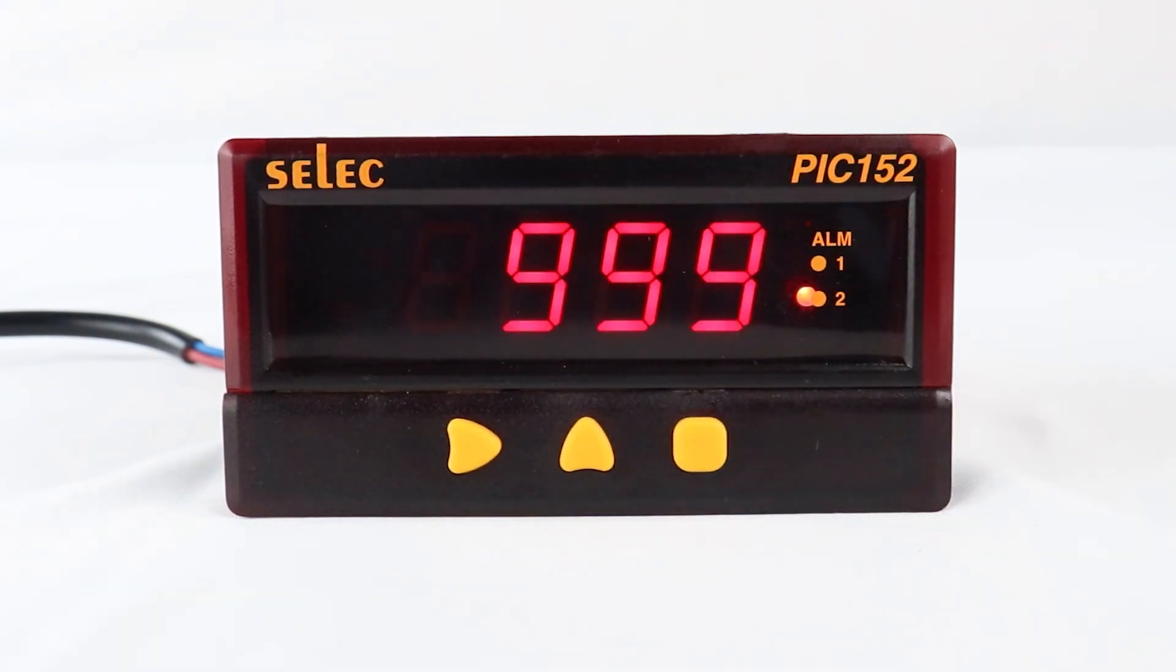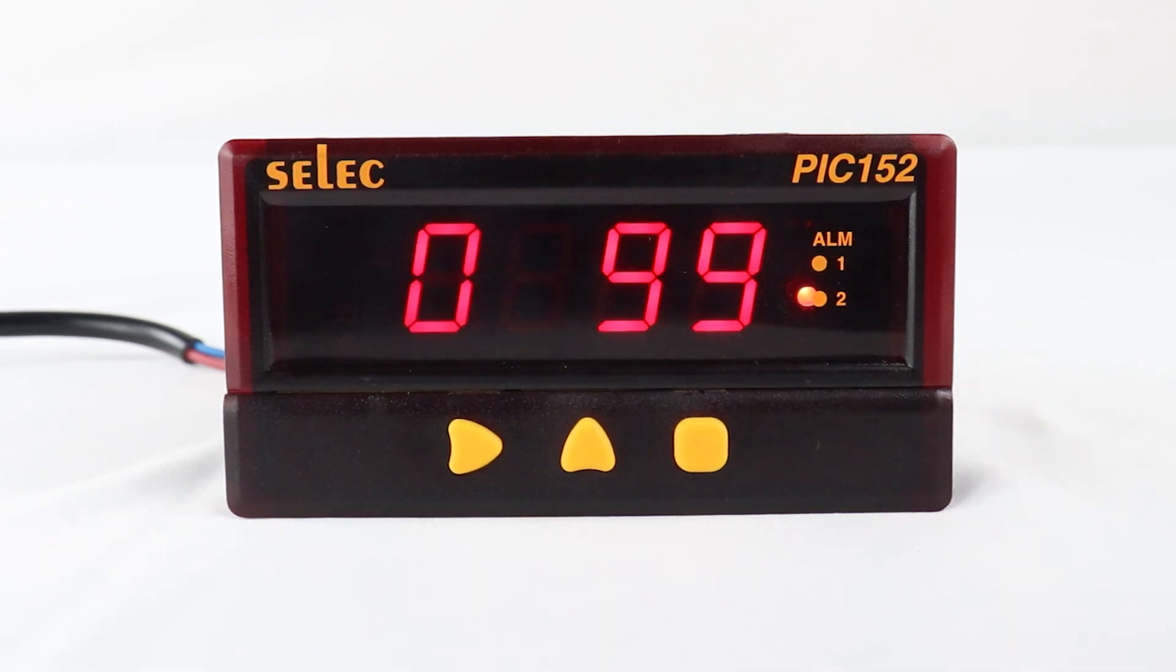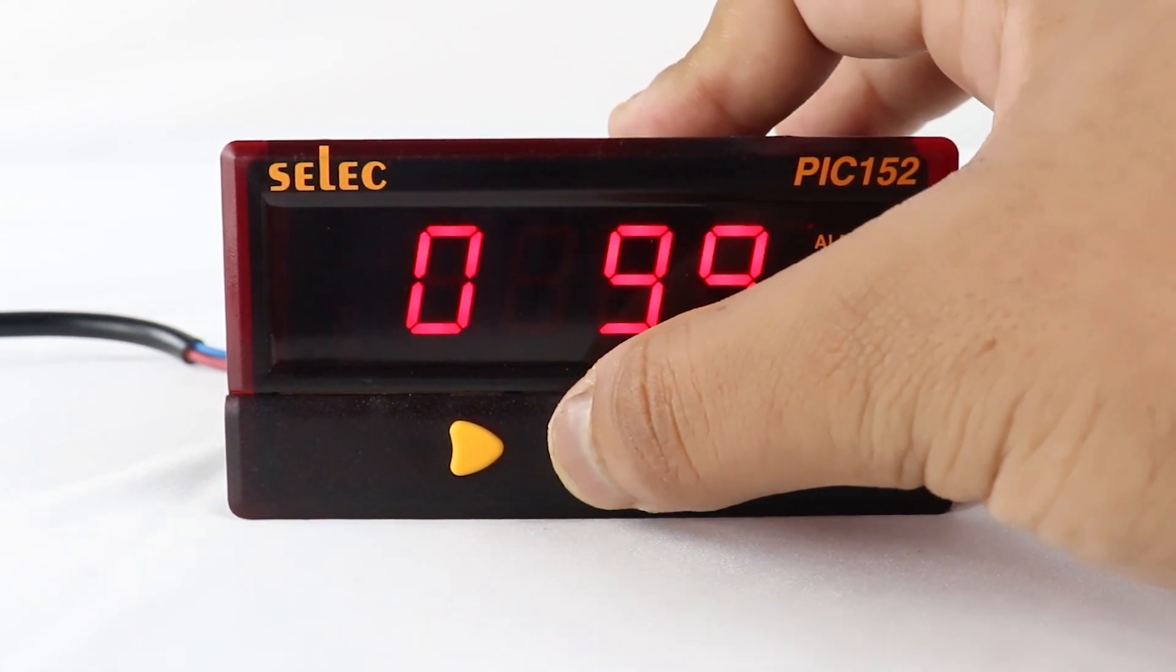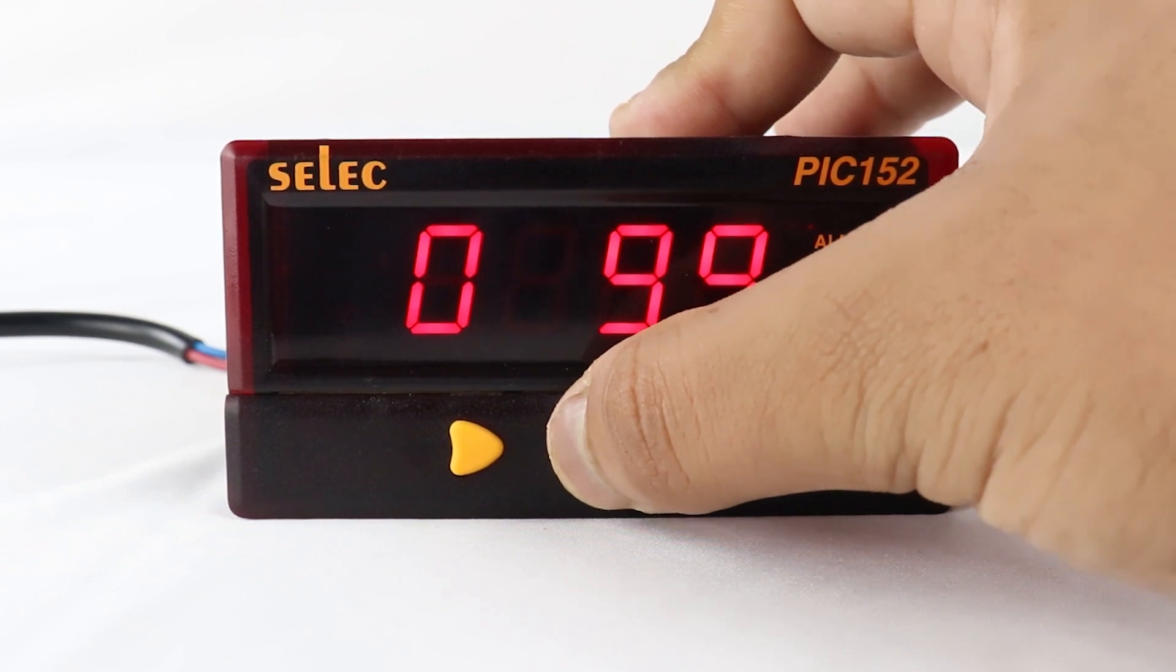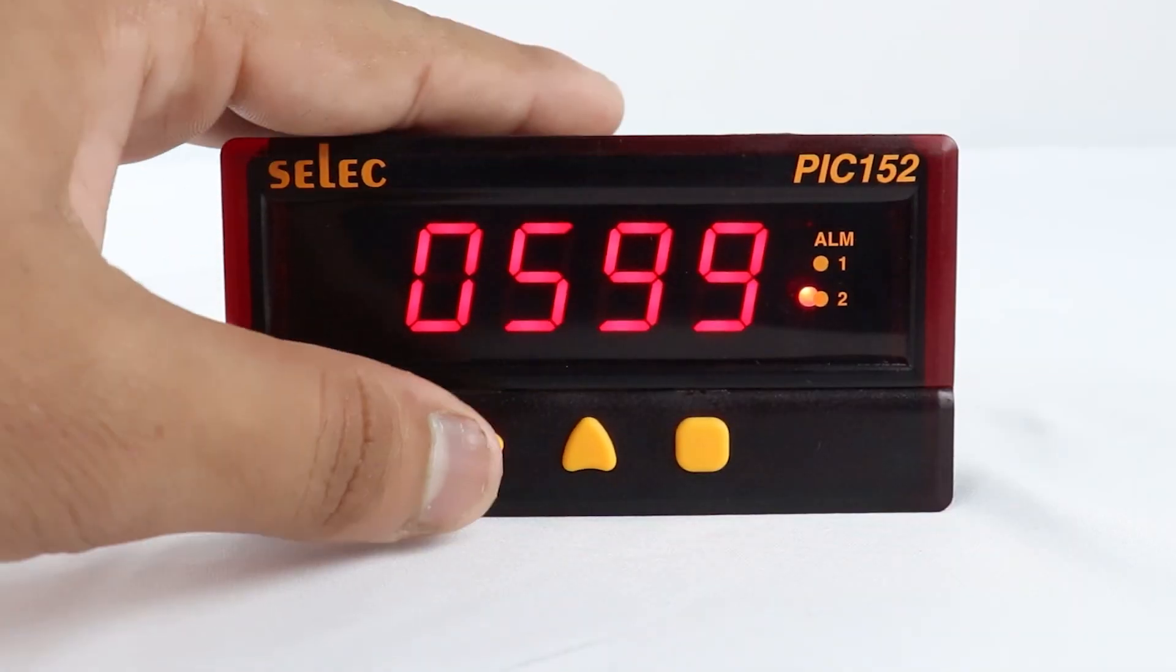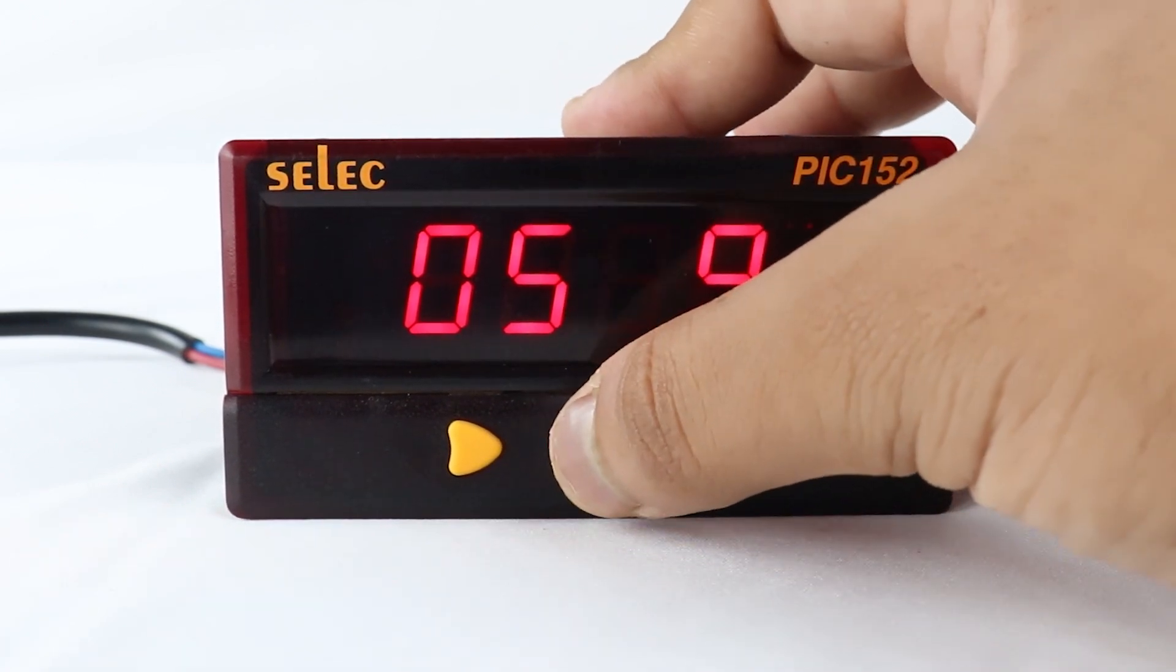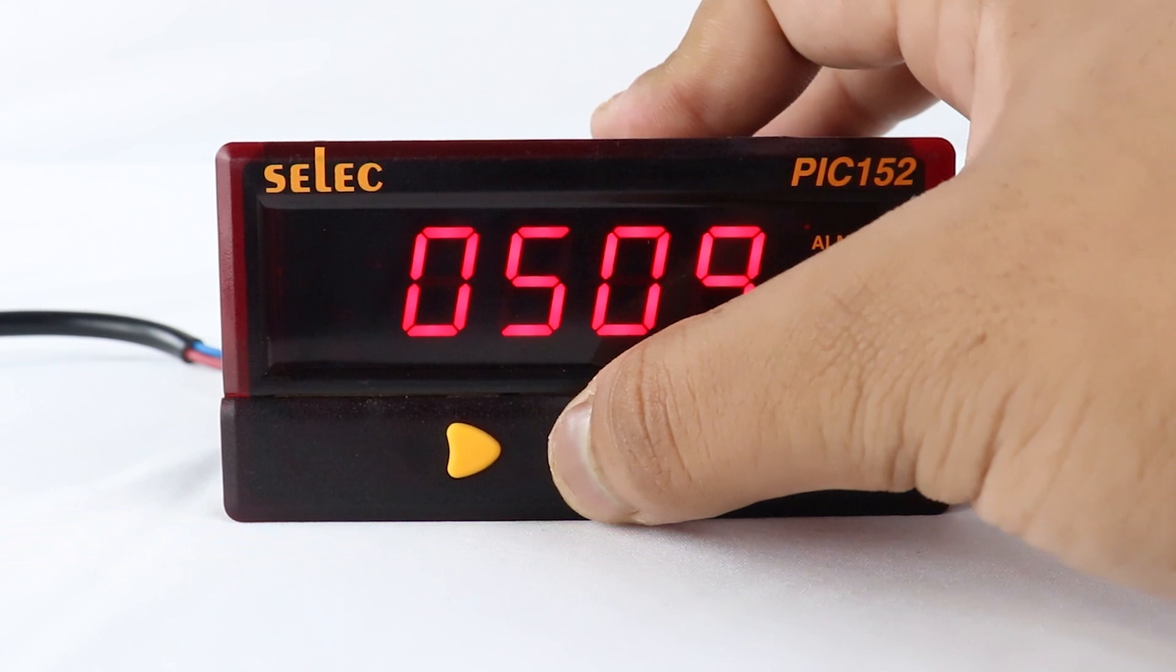Next is analog high scaling point A-HI. For desired output to be 0 milliamps at 0 degree Celsius and 20 milliamps at 500 degree Celsius, that will be 500.